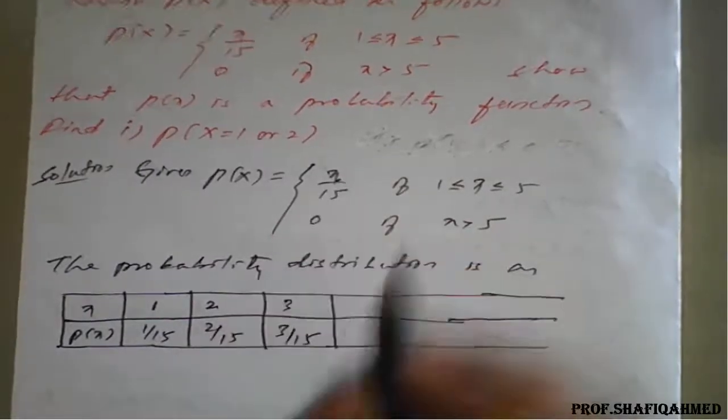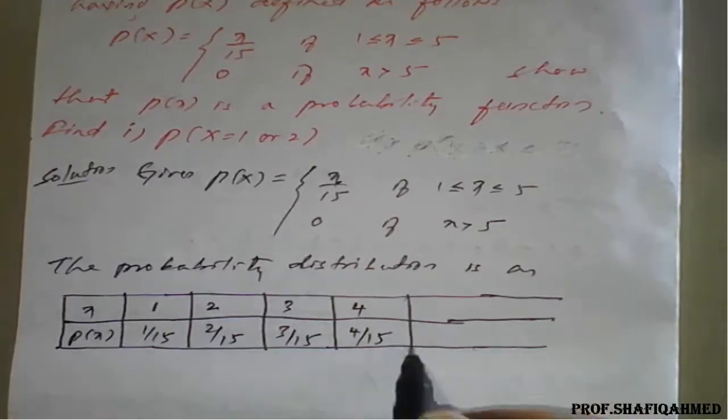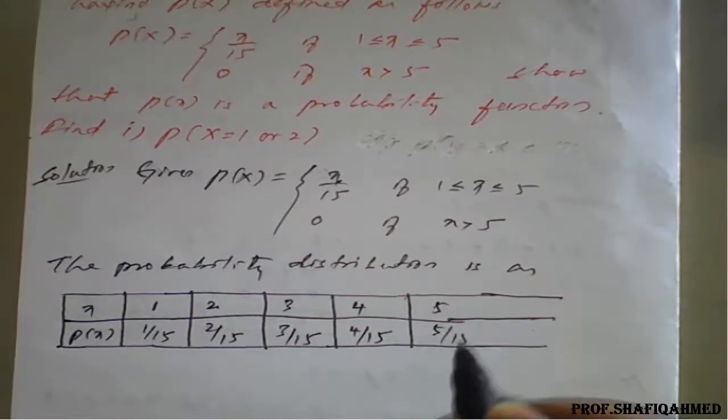When X is 4, it will become 4 upon 15. When X is 5, it will become 5 upon 15.